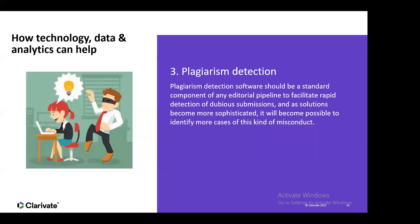Plagiarism detection software is used by most universities at a student level and also for editorial submissions. It allows for broader detection, though each case is a case-by-case basis — sometimes what's flagged is not actually plagiarism but a legitimate reference to prior research. Of course, copying and pasting without referencing is not allowed, and all sources should be referenced. Software really helps the research community to detect this.